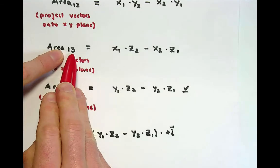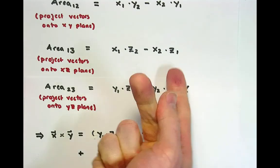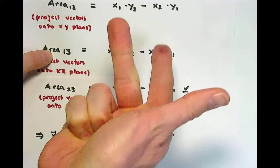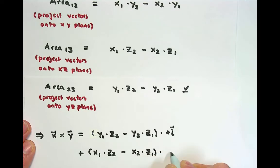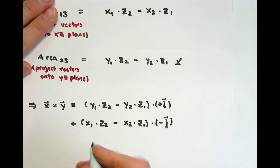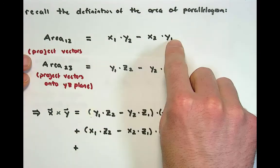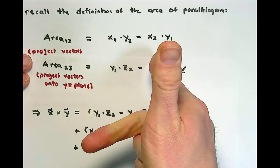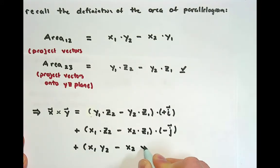To get area 1,3, we deleted the y component — the second one. Recall that when we had i cross k, that area was in the negative j direction. So x1 z2 minus x2 z1, by that orientation, should be negative j. Then we're left with one more, which comes from deleting the z values — x cross y — and the cross product is in the positive k direction. So this is x1 y2 minus x2 y1, in the positive k direction.